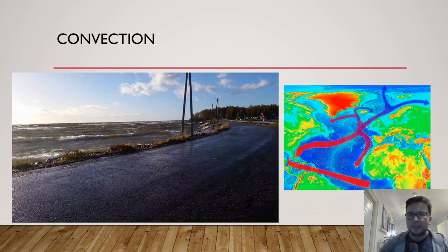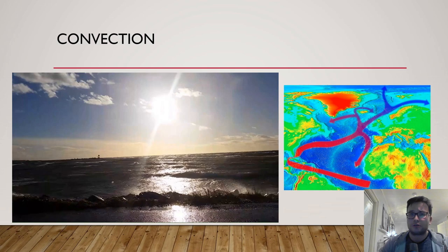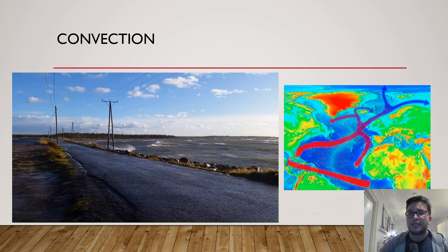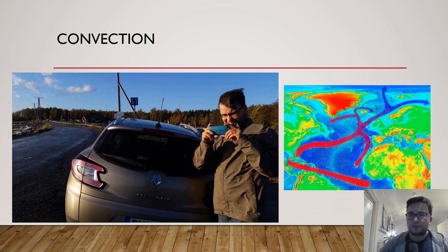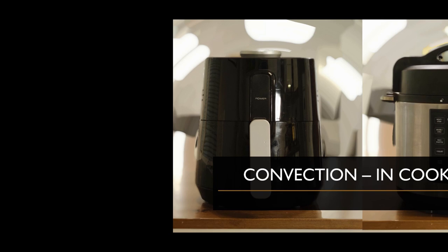In convection, heat is transferred by gas or liquid — it either makes you feel really cold or hot. In this left-hand side video we see a windy place at the seashore — cold air flowed against me and absorbed heat from my skin by convection, making me feel extremely cold even though the air temperature was only around 15 °C. On the right-hand side we have a picture of the Gulf Stream — hot water from the equator transfers heat to the Nordic countries and gives them more pleasant weather.